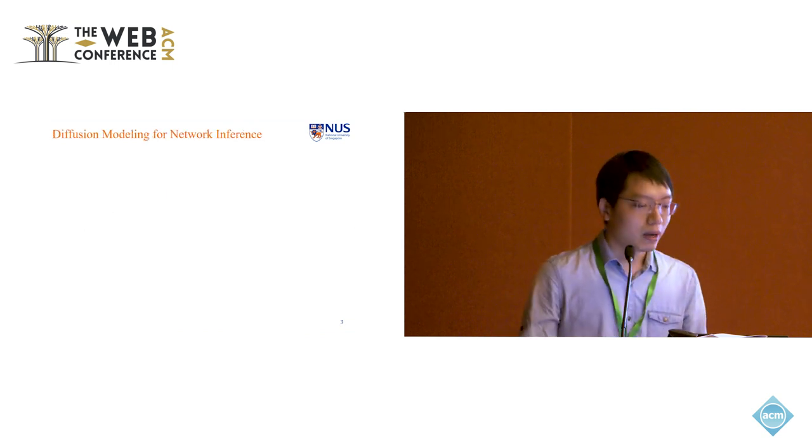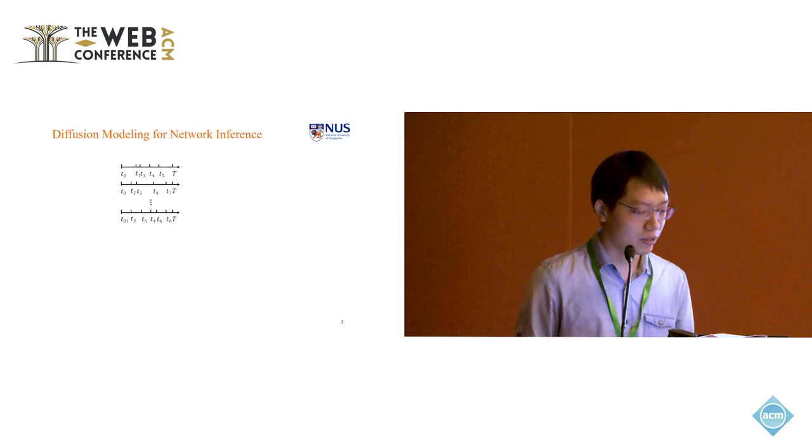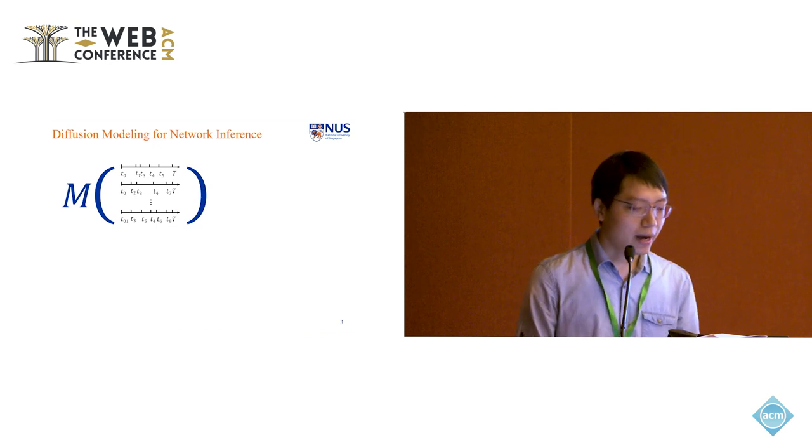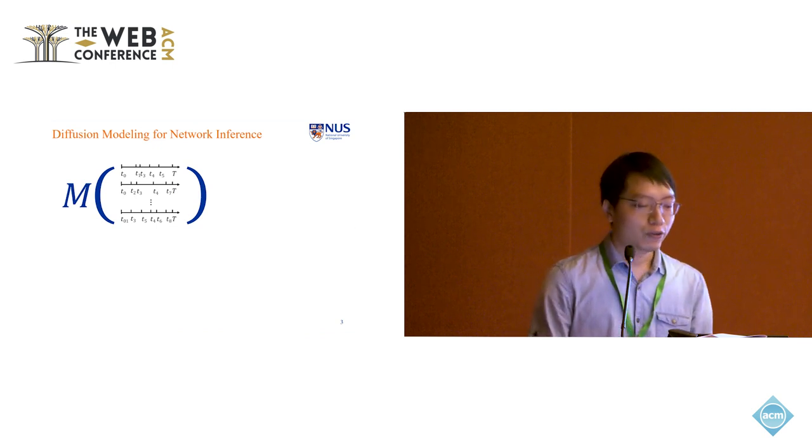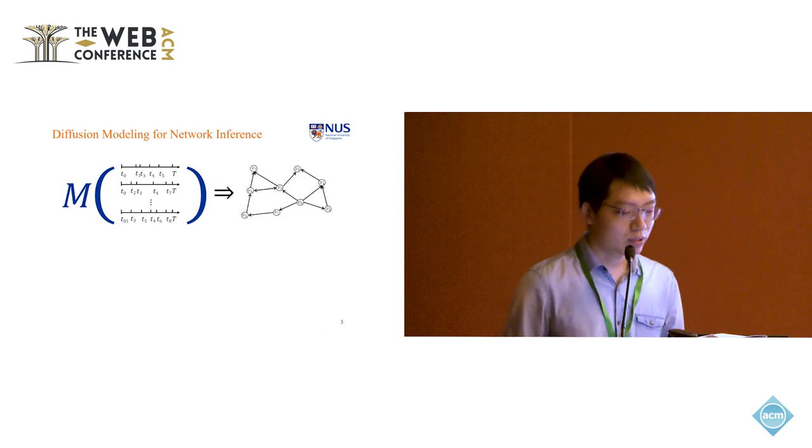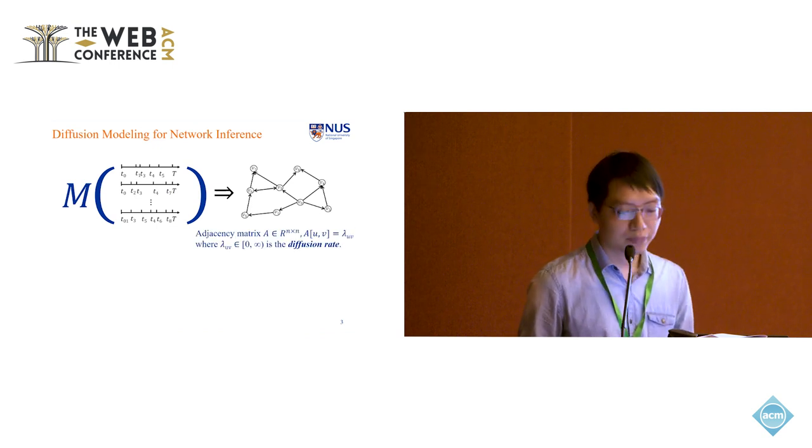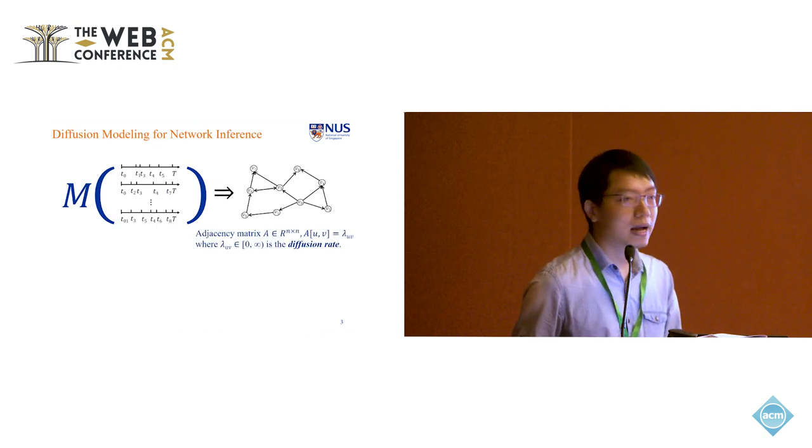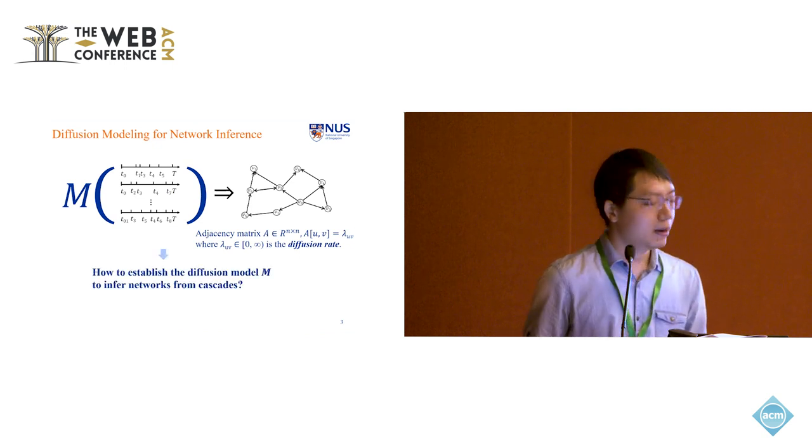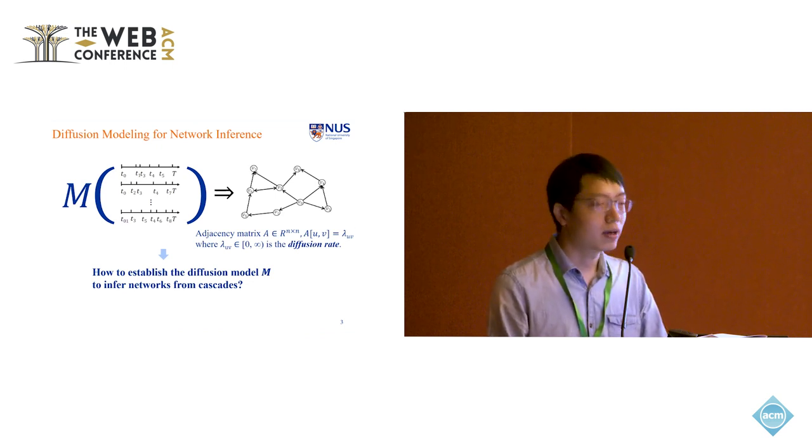What we have is only the infection time of each node and stored as a cascade c. So in the literature, based on the given cascade data, the diffusion modeling for network inference has been long studied. So the problem here is to find a model modeling the diffusion from the cascade data only for the network structure. Here, network structure is represented as adjacent matrix. The element ue here is a parameter lambda ue termed as the diffusion rate. So the question here is how to establish the diffusion model m to infer the network structure from cascade data.